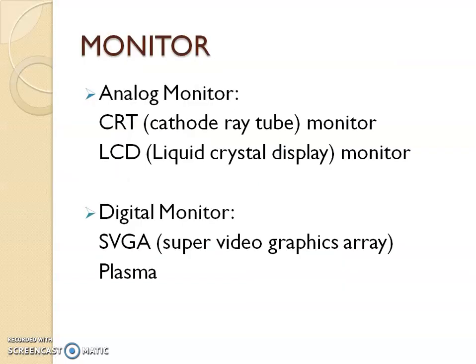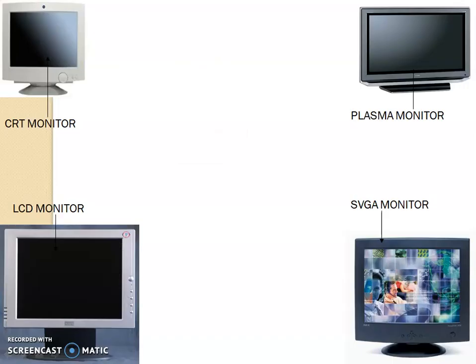Next is the monitor. There are a wide variety of monitors — CRT (cathode ray tube), LCD (liquid crystal display), and digital monitors like SVG, super video graphics array, or plasma. These older monitors are not commonly in use nowadays, but it is still good to know about them. This is a CRT monitor, this is a plasma, this is an SVGA, and this is an LCD monitor.